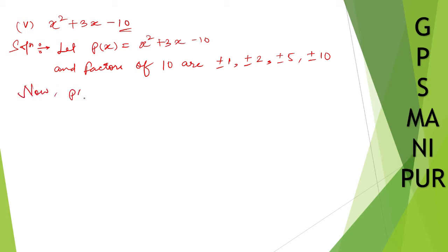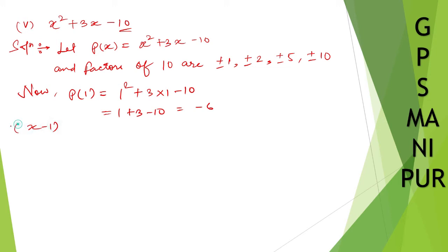Now p(1) is equal to 1 squared plus 3 into 1 minus 10. So 1 plus 3 minus 10, which is 4 minus 10, equal to minus 6. So we can say x minus 1 is not a factor of p(x).